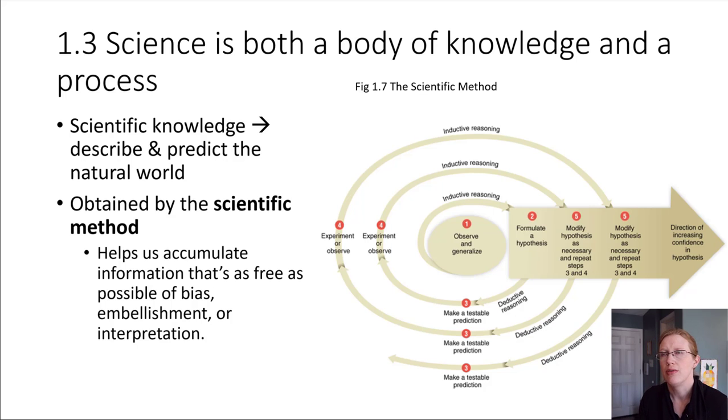Okay, so the process of doing the scientific method goes something like this. We would start off by making some sort of an observation. And so another way to say this is just kind of you notice something about the natural world. It could be something you find kind of interesting. I'm going to go with the example that our textbook uses. So an observation and a generalization might be something like this.